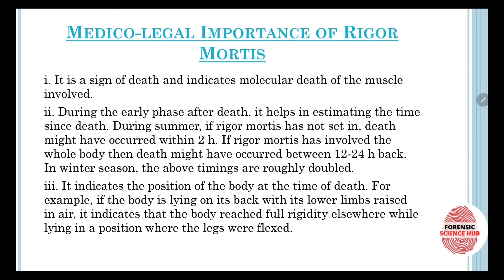The medical-legal importance of rigor mortis: it is a sign of death and indicates the molecular death of the muscles involved. During the early phase, it helps in estimating the time since death. In summers, if rigor mortis has not set in, death may have occurred within two hours; if rigor mortis has involved the whole body, death may have occurred between 12 to 24 hours back.